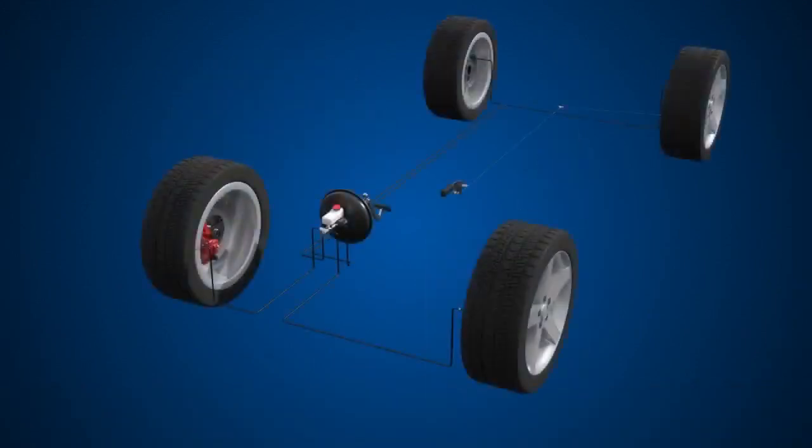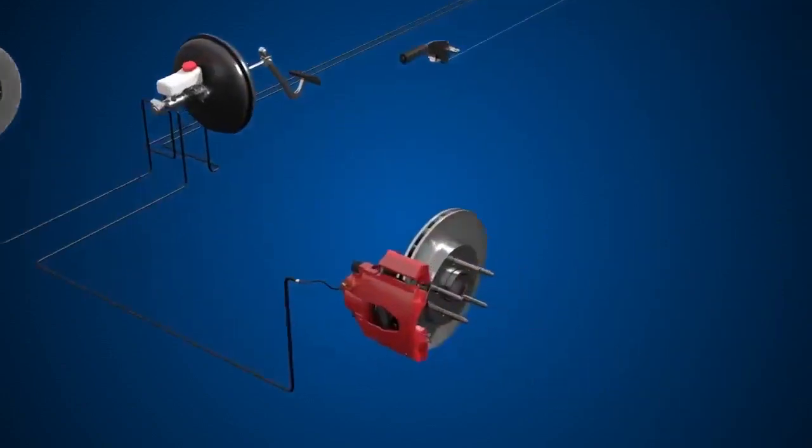Now, let's take a look at a light vehicle braking system. At the front of our vehicle, we have disc brakes.